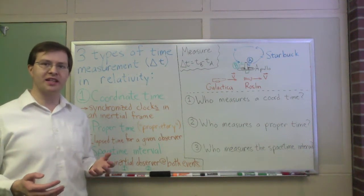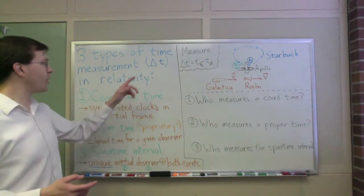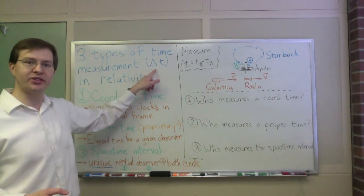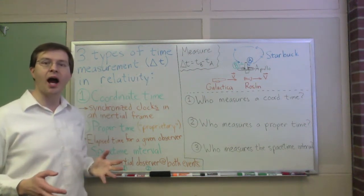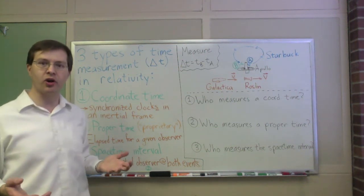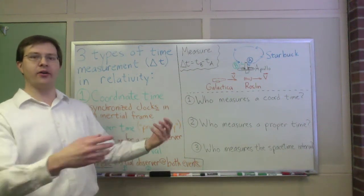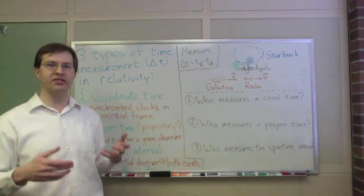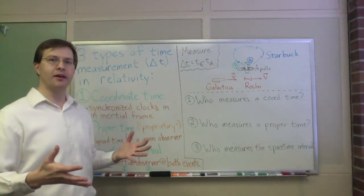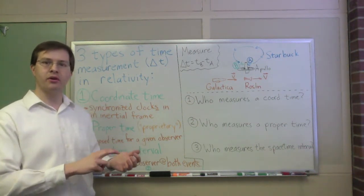So I want to take just a minute to think about the different ways that different people can measure time. In particular, I want to talk about differences in time, delta t. Delta t is the time between two events. So an event in relativity, as you recall, is something that happens at a particular place and time. So a firecracker explodes, or Abe Lincoln gives the Gettysburg Address, or something.